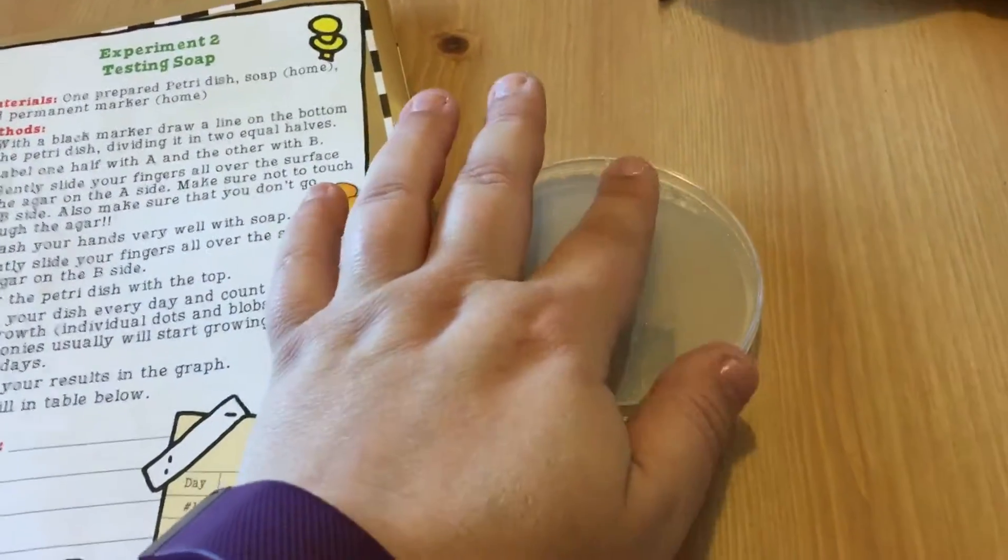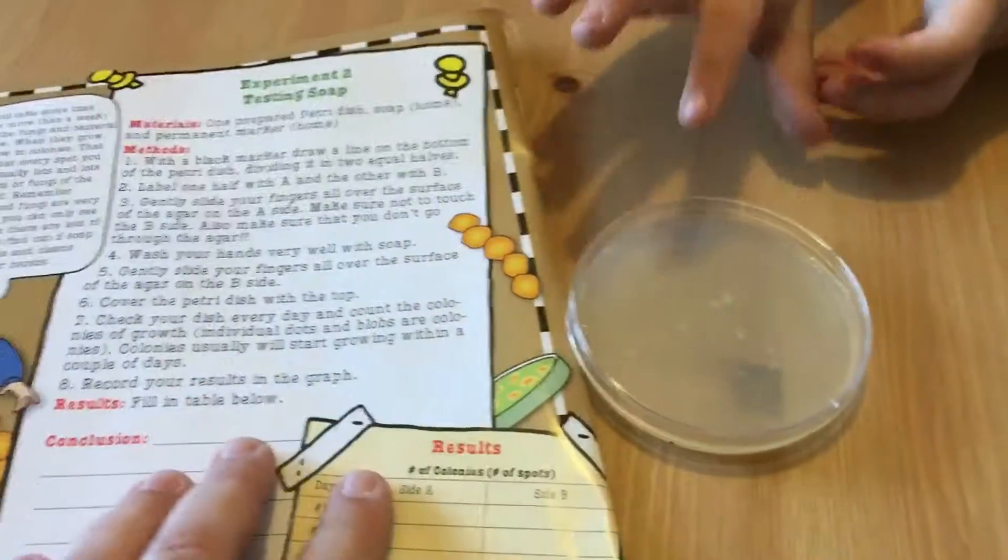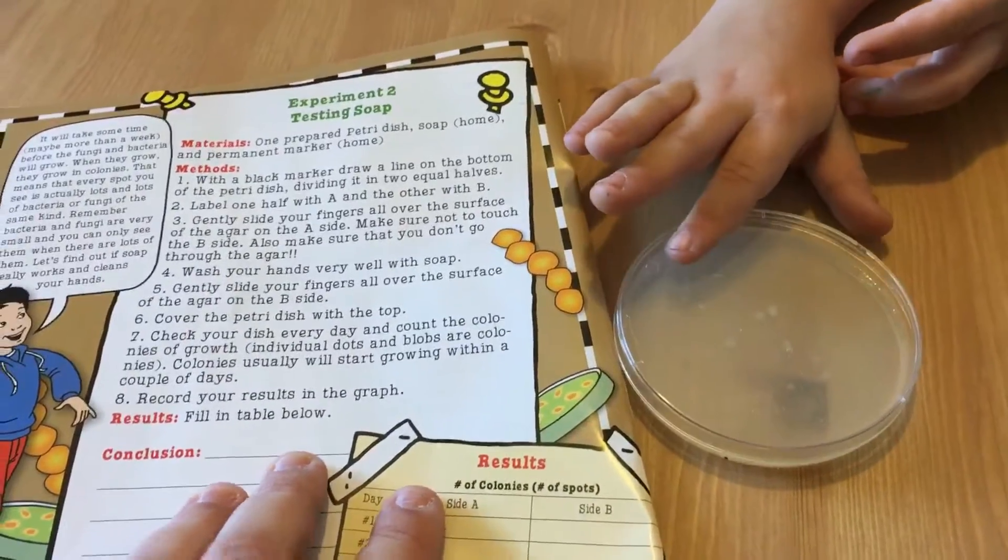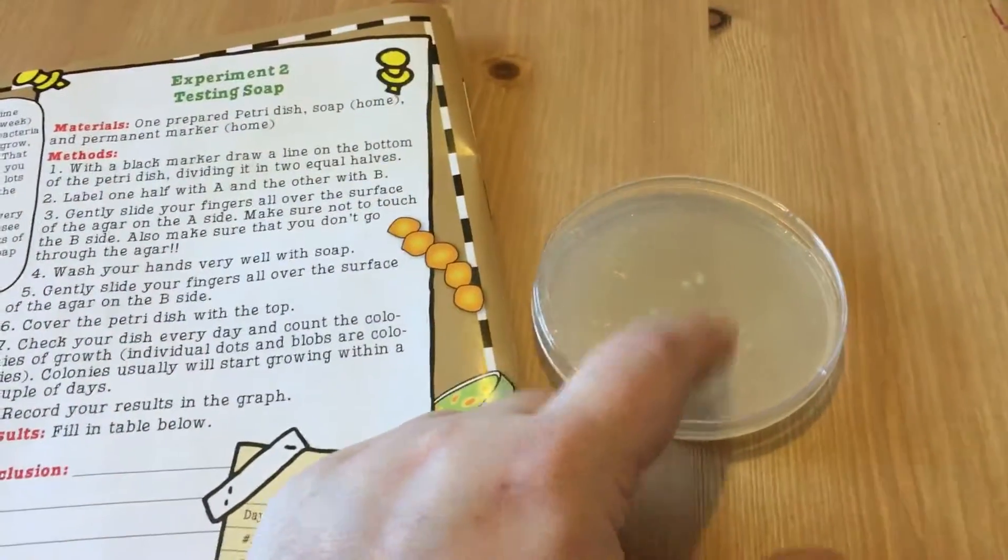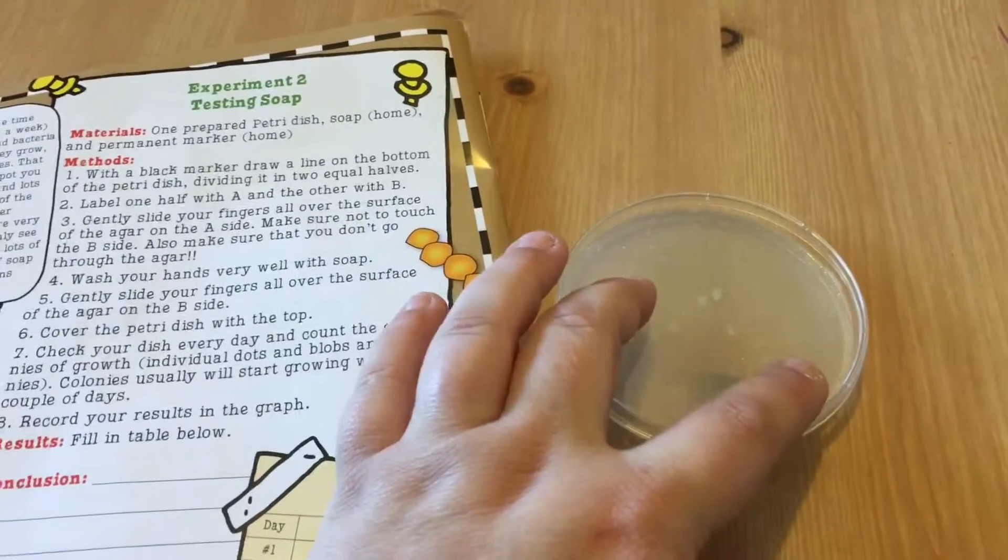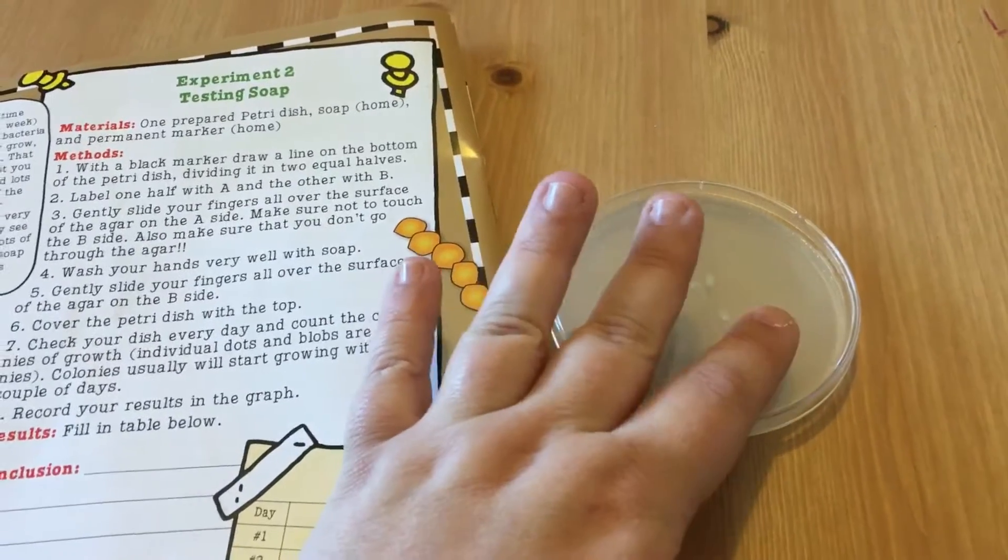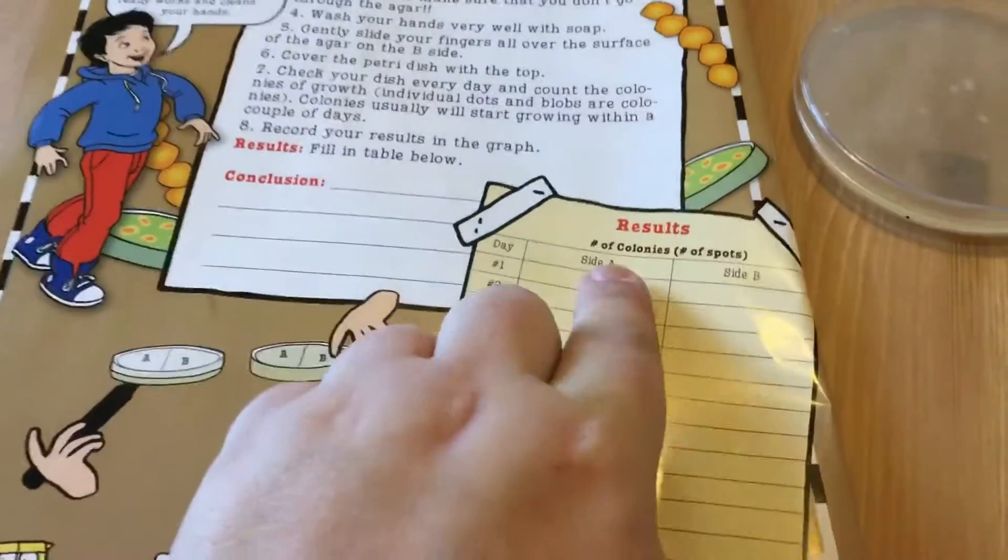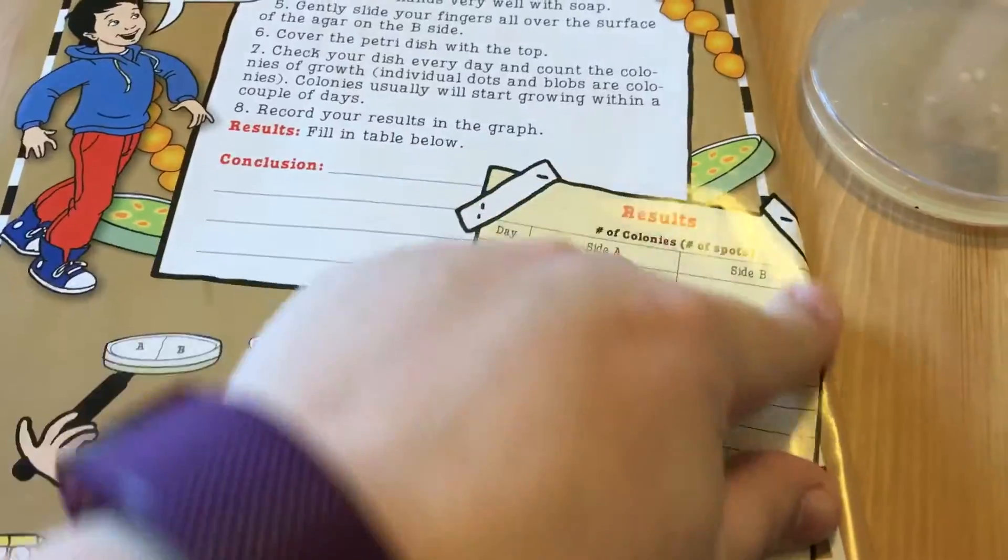And we are going to see how well soap works. Are we going to get bacteria growing on both sides? Is it going to be the same bacteria? Will one side have bacteria, will one side not? We're not sure.